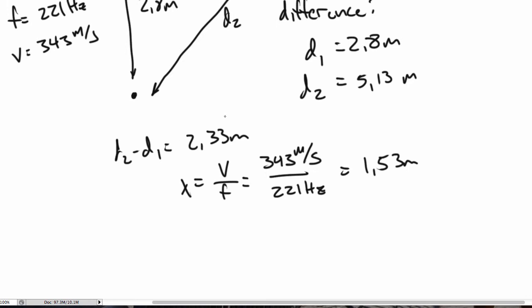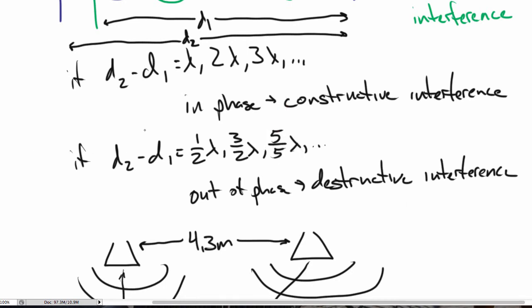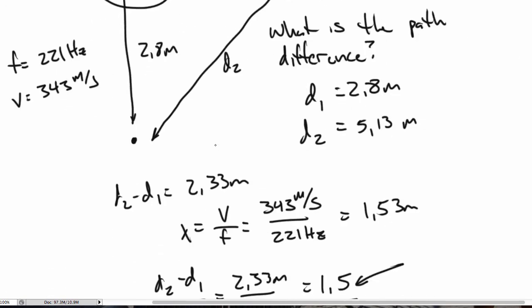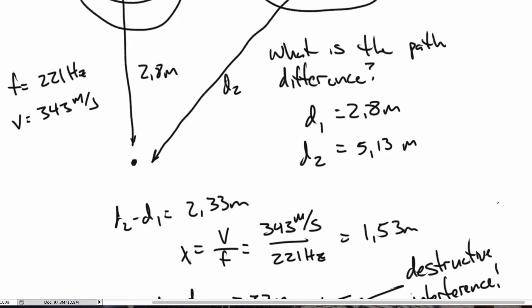So my path difference is 2.33 meters and my wavelength is 1.53 meters. If I take the ratio of those two things: 2.33 divided by 1.53, I see that I get a ratio of 1.5. In other words, my path difference is 1.5 times the wavelength — that satisfies the half-integer criterion. So I expect to have destructive interference, and I will hear no sound at all if I'm sitting exactly at this position.